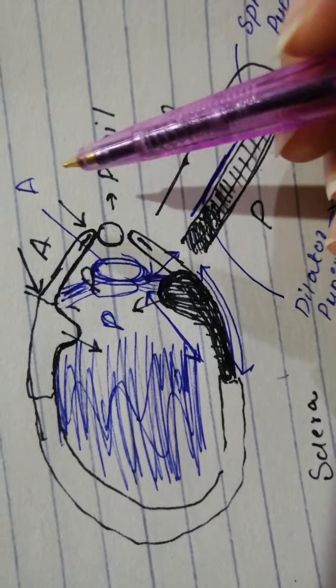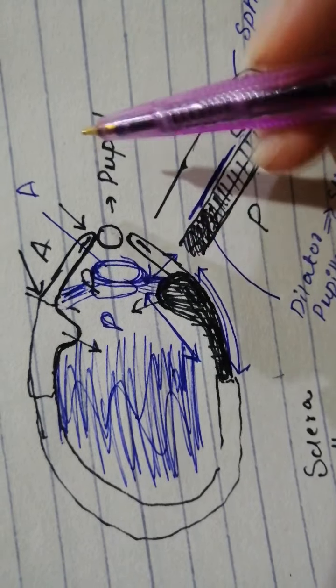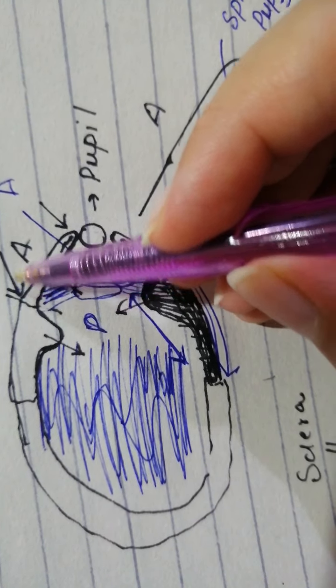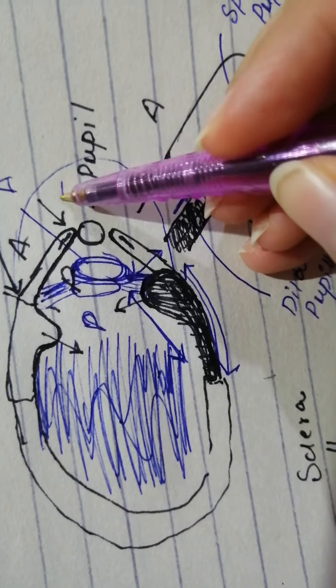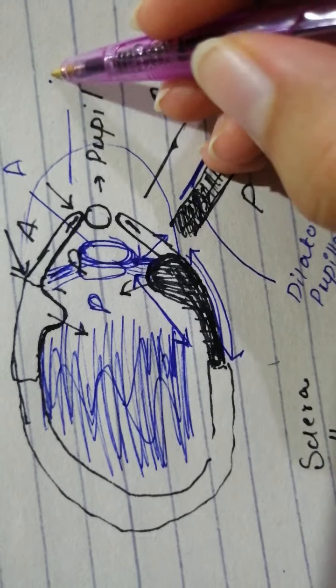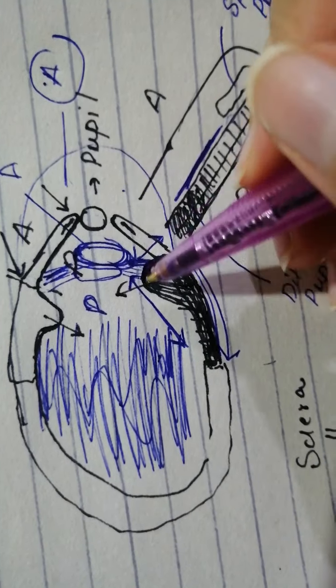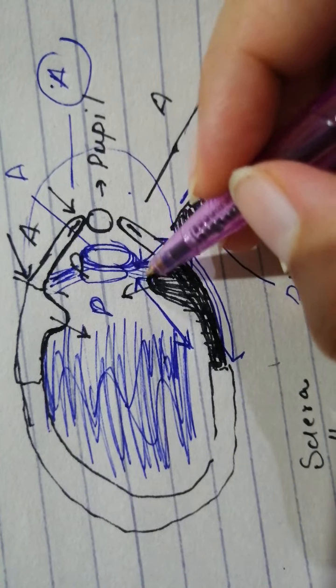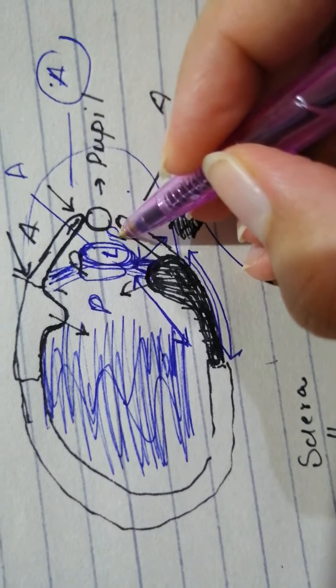Now if we talk about there is aqueous humor and there is vitreous humor. So over here you would have the cornea. This space is considered the anterior segment, the one that is in front of the iris and the part that is between the iris and this is the lens. This is the posterior segment.